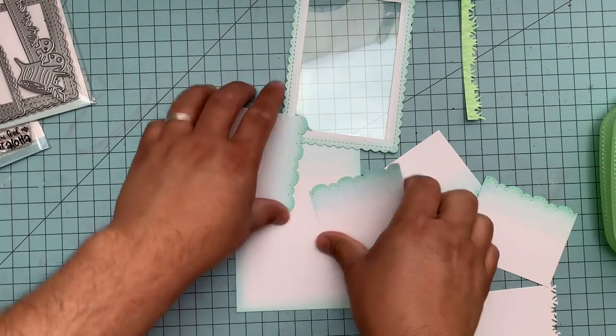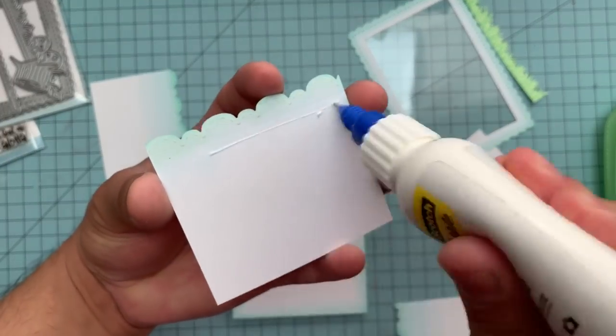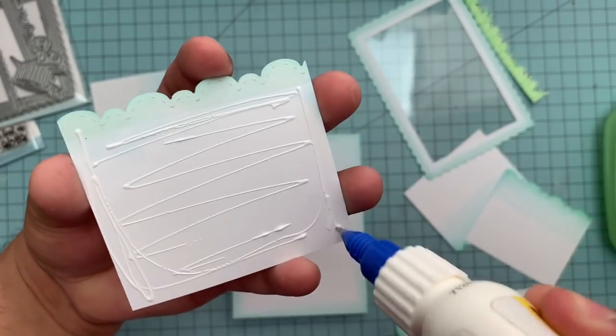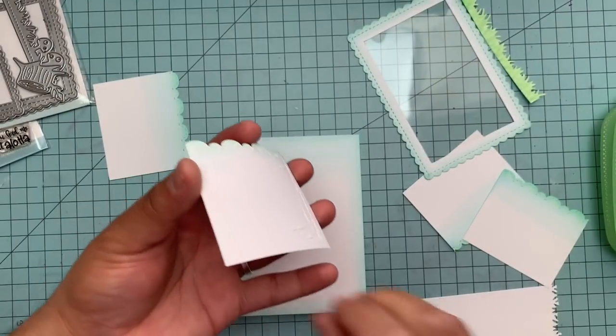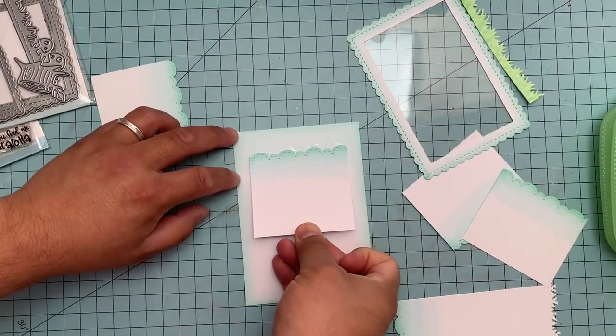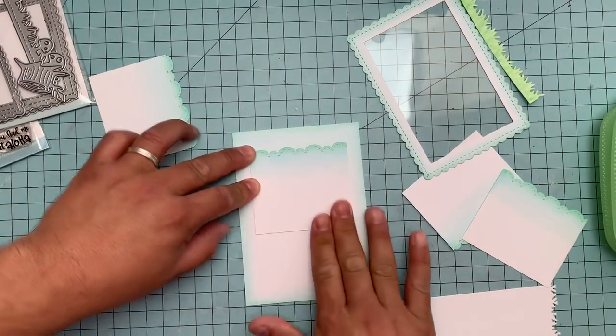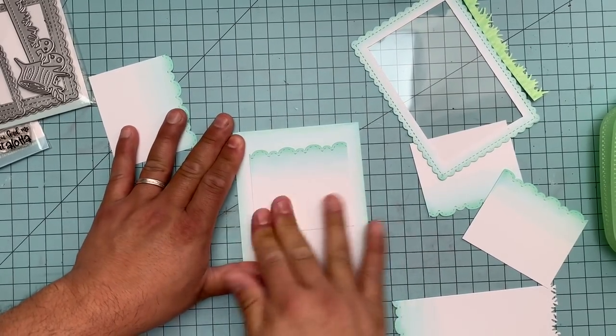I'm going to use wet glue because if I use the other glue it'll leave more of a thickness on the card. Since it's going to be foamed, I need to make sure I have it as flat as possible.